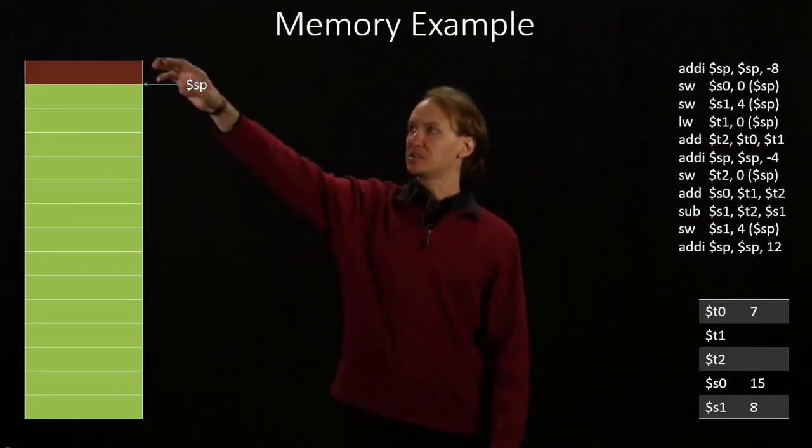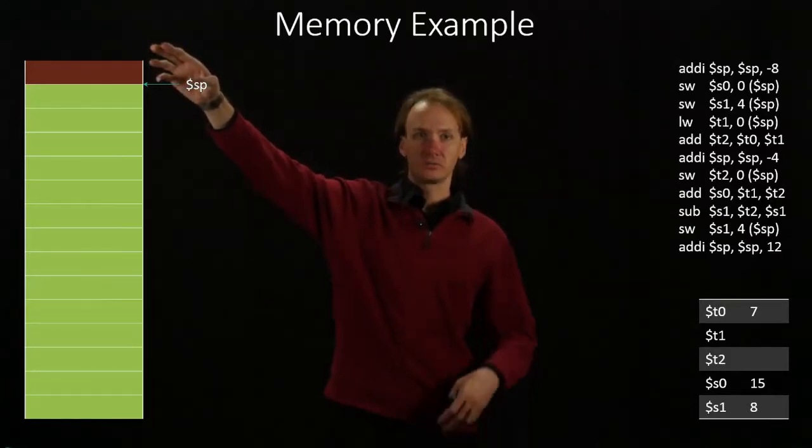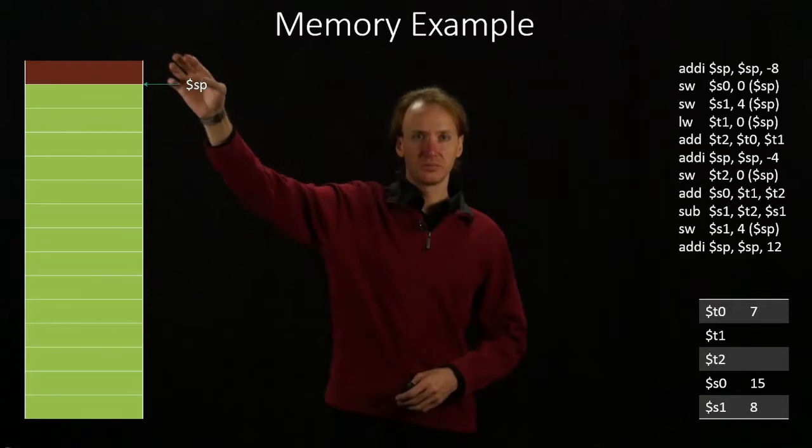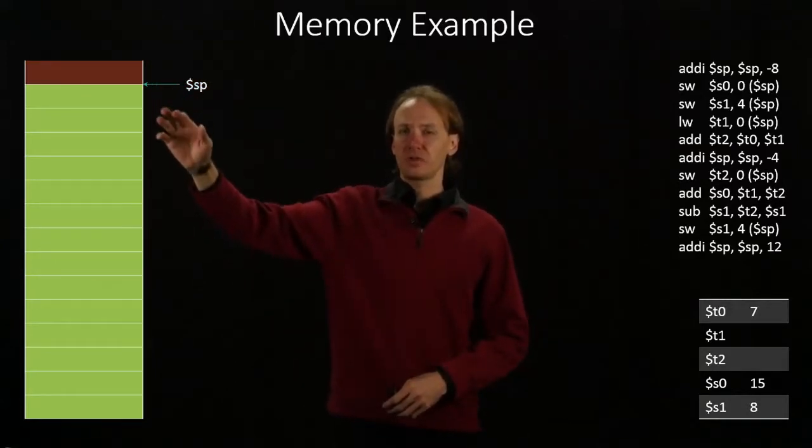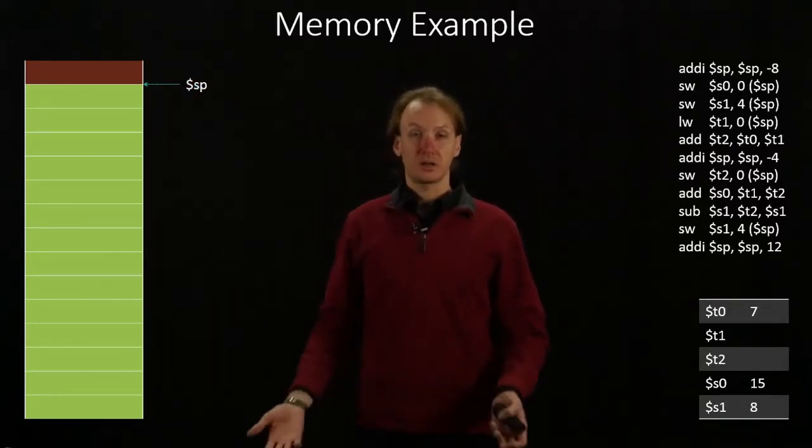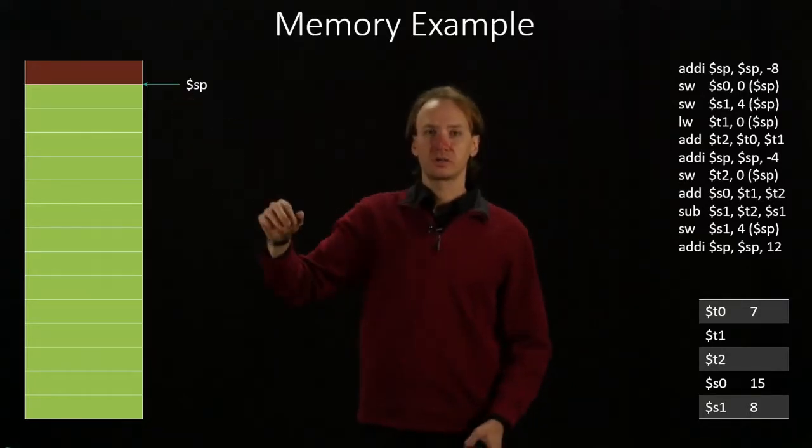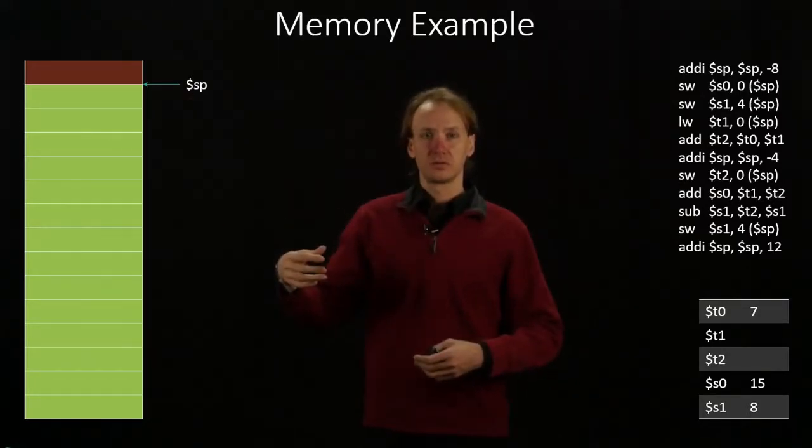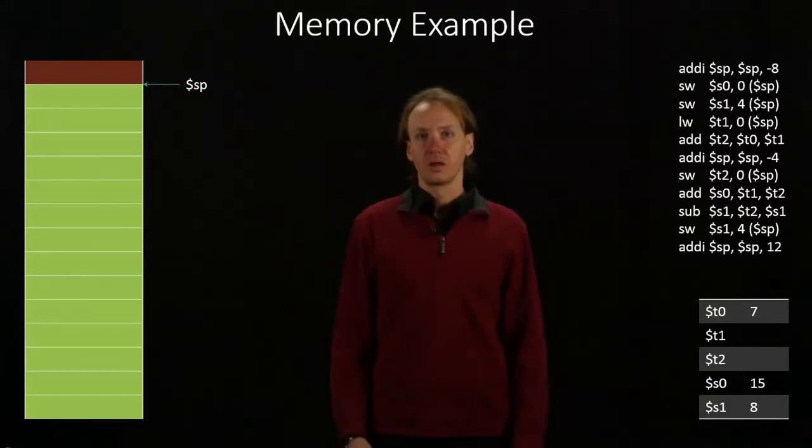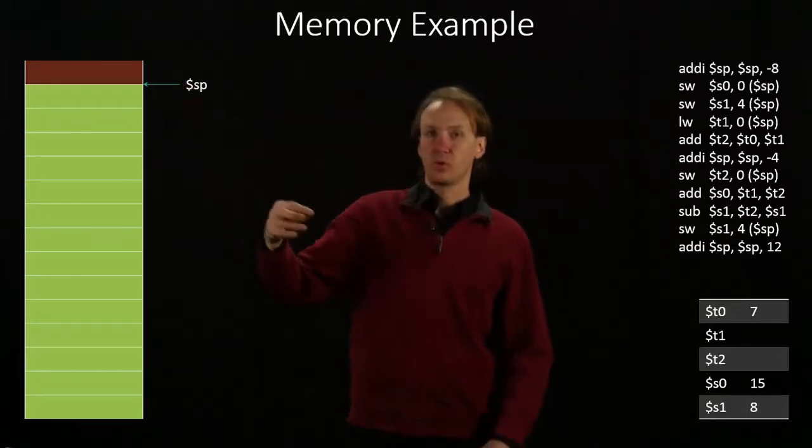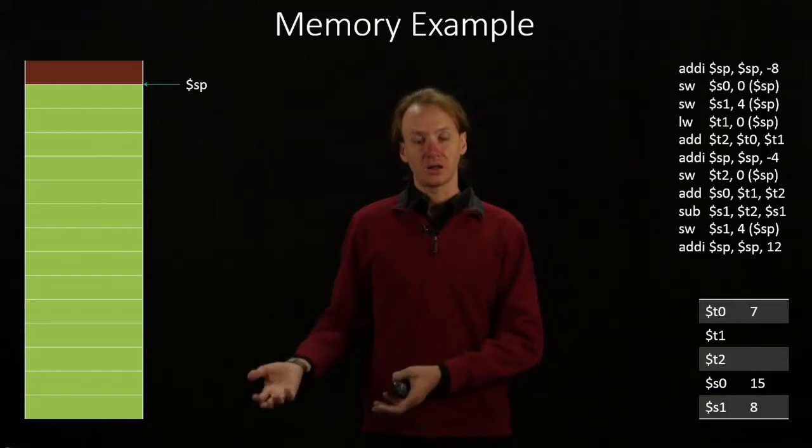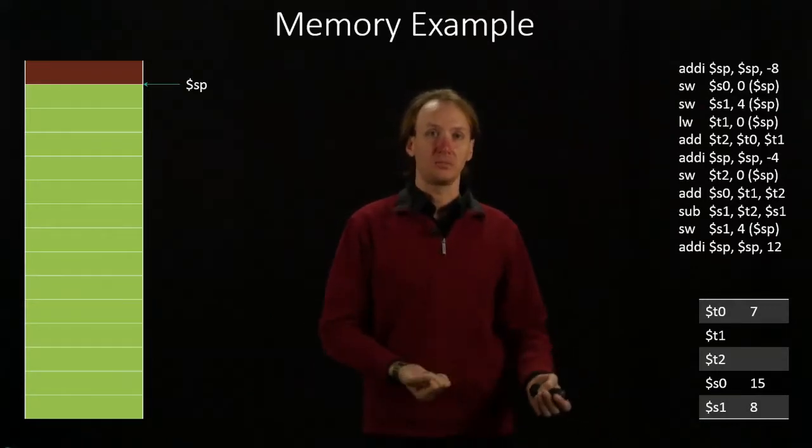Up at the top, it's got some allocated memory, something that some other function has used. And then everything else in green is unallocated memory. I have a stack pointer here telling me where the demarcation between allocated memory and unallocated memory is.